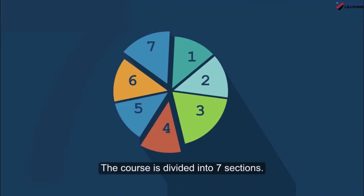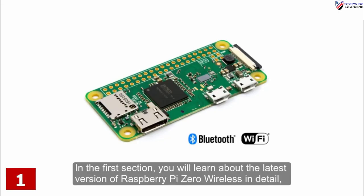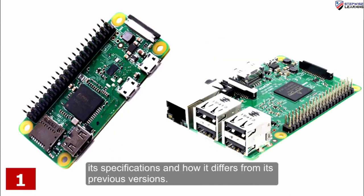The course is divided into seven sections. In the first section you will learn about the latest version of Raspberry Pi Zero wireless in detail, its specifications and how it differs from its previous versions.